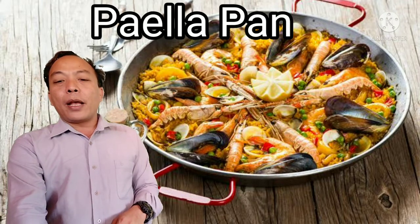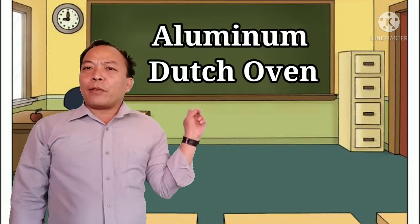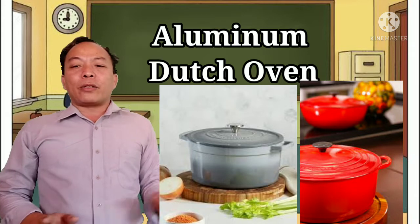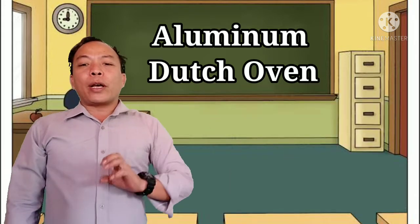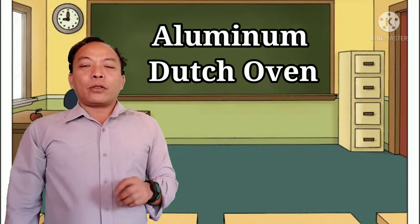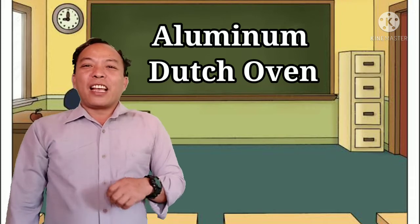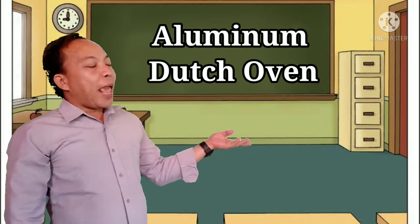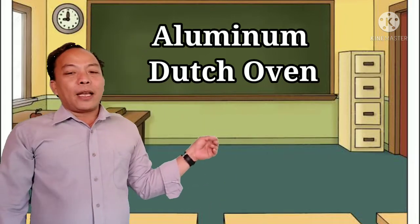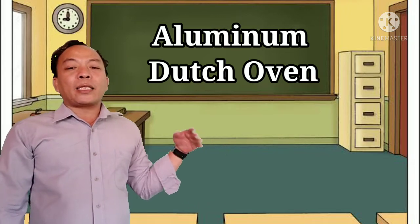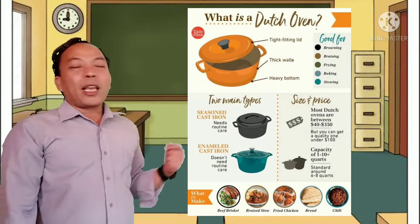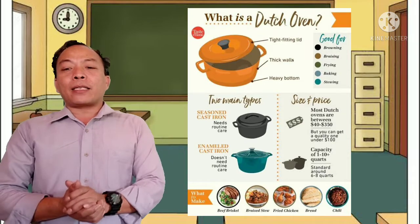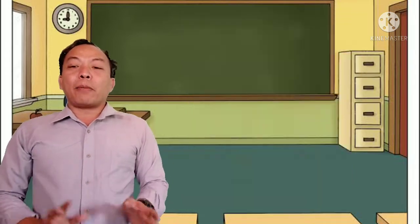Next we have the cast aluminum Dutch oven. Cast aluminum heats evenly and consistently with no hot spots, so food cooks better with less chance of scorching. Nothing sticks or burns easily. This is very ideal for stews and baked dishes, is rust-resistant and non-stick, lightweight, and easy to maneuver around the kitchen.